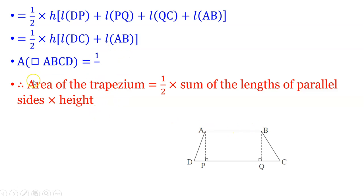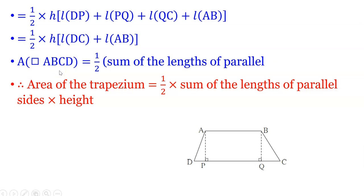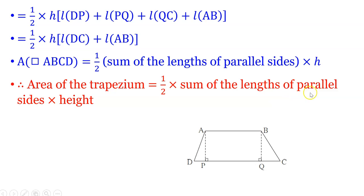And hence the area of trapezium ABCD is 1/2 × (sum of the lengths of parallel sides) × H. Therefore, area of trapezium = 1/2 × (sum of the lengths of parallel sides) × height, where AB and DC are the parallel sides.